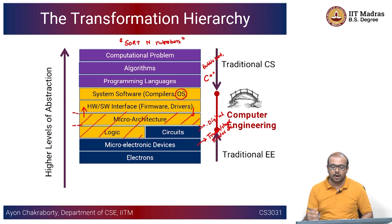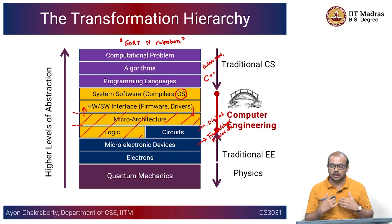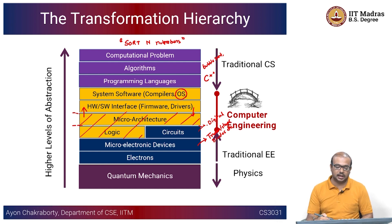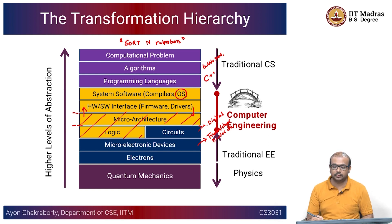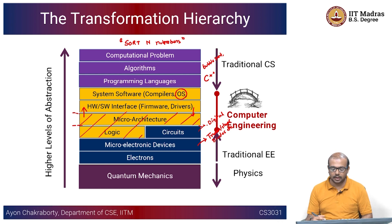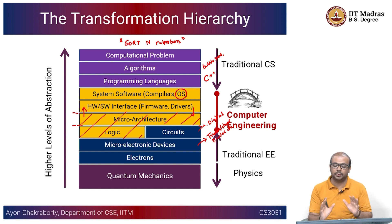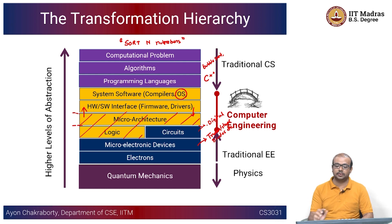Beyond electrons, there is quantum mechanics — that is how physics meets traditional electrical engineering disciplines. This is the entire transformation hierarchy. It will be nice, when you execute your next algorithm, to think about this transformation hierarchy and appreciate what is going on — starting from your compilation, to your operating system taking over the code and giving it to the underlying microarchitecture, to the digital circuits taking over and manipulating lots of transistors inside your system, and those transistors controlling or orchestrating the flow of electrons. This is a superficial picture, but at least it gives you an idea about the flow and the different layers of abstraction.